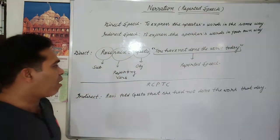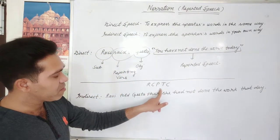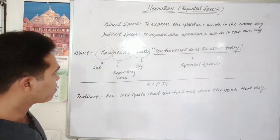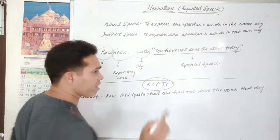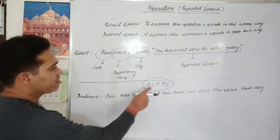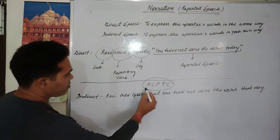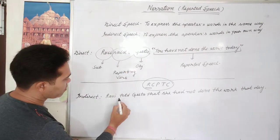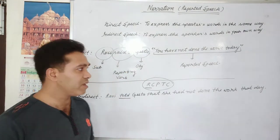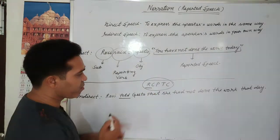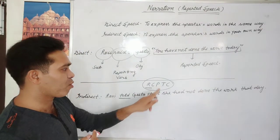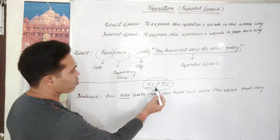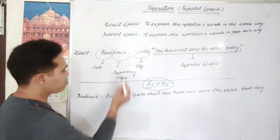How do we change it? RCPTC. R for reporting verb, C for conjunction, P for pronoun, T for tense, and C for condition. First, reporting verb: 'said to' is changed to 'told'.